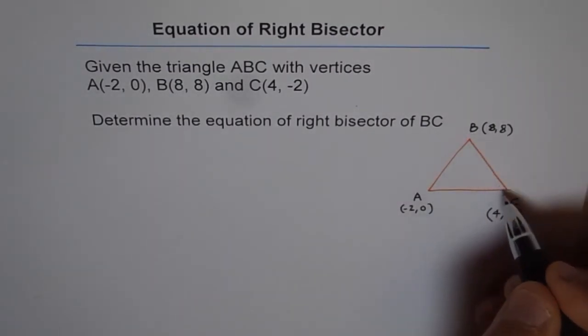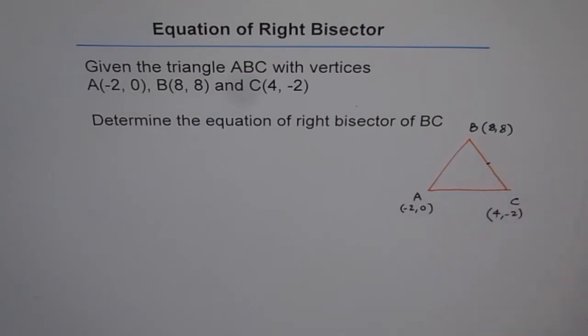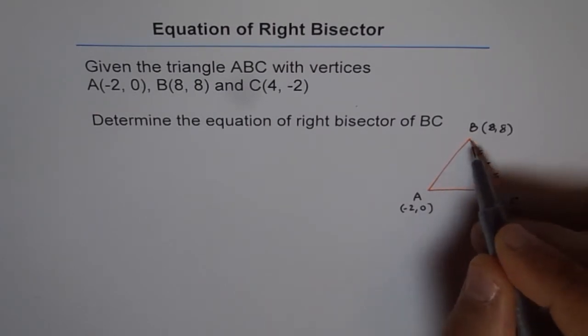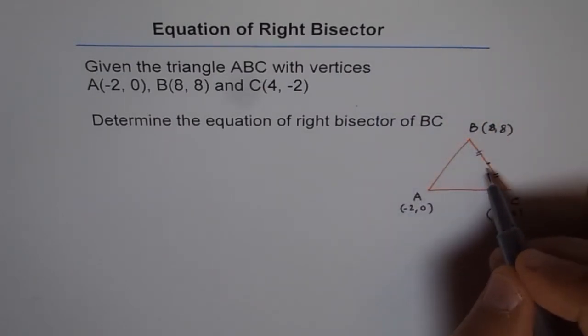So BC is the line which has to be right bisected. That means, first we need to find the center of this line. So if you find the center of the line, then you know this side will be equal to this side. So any line going through the center will bisect BC. That is the bisector. Right means it has to be at right angles. Right angles means perpendicular to this.